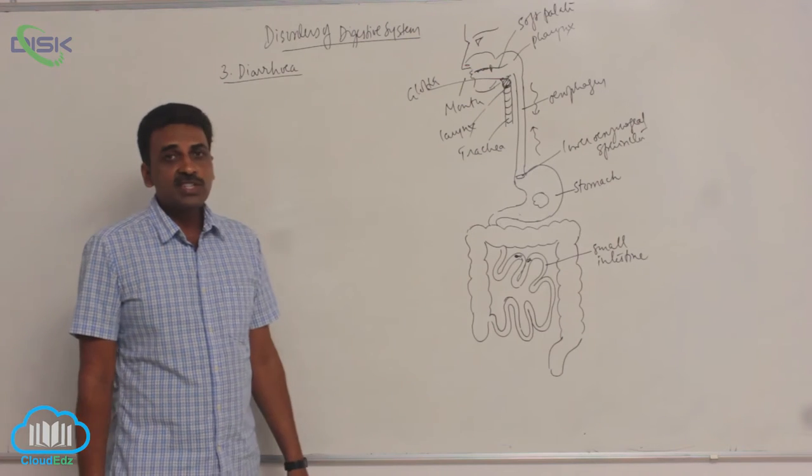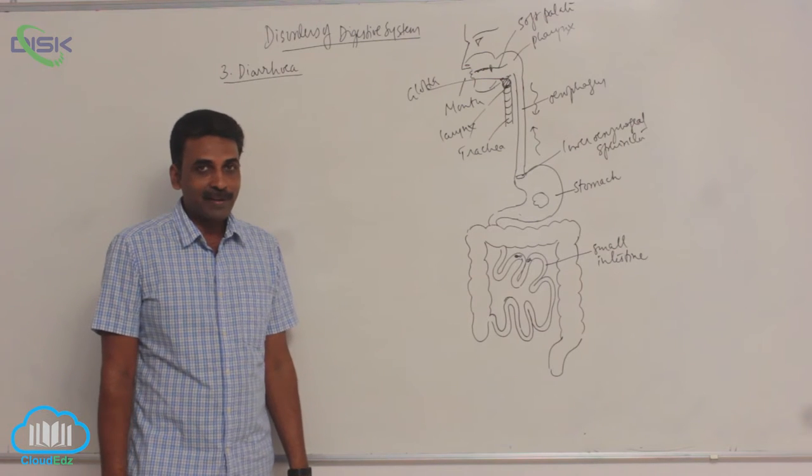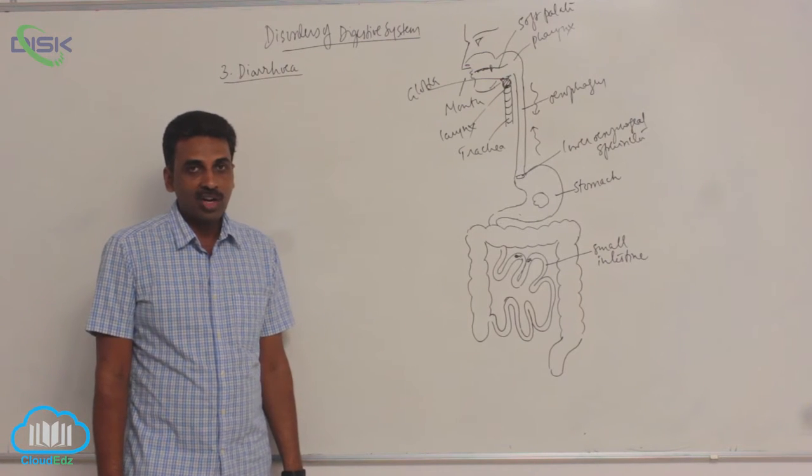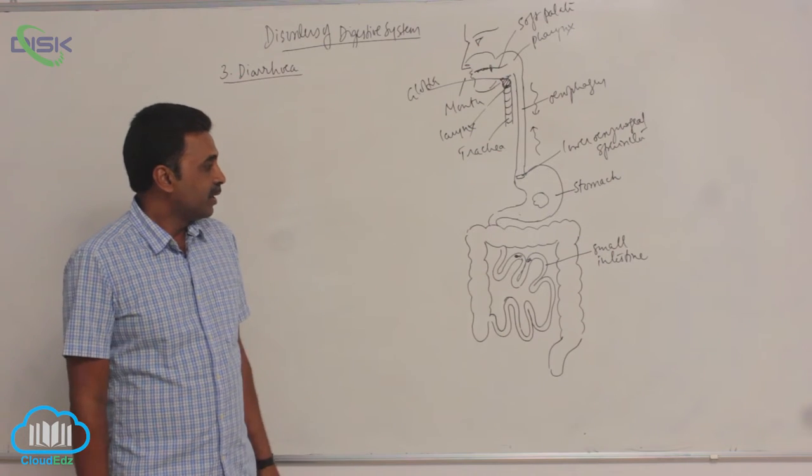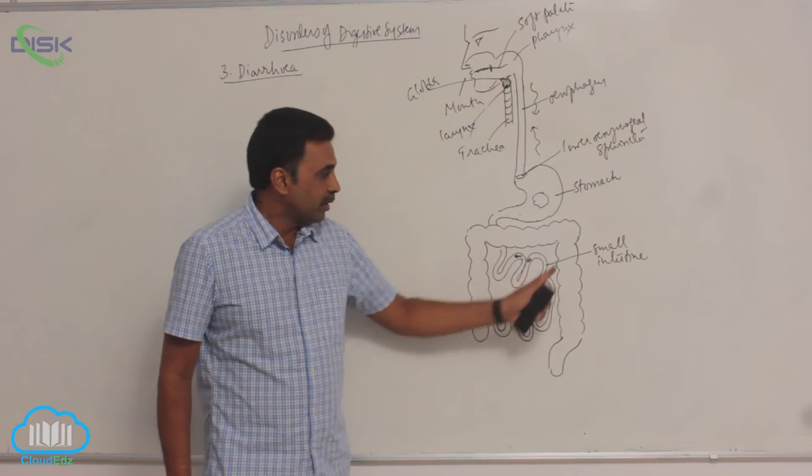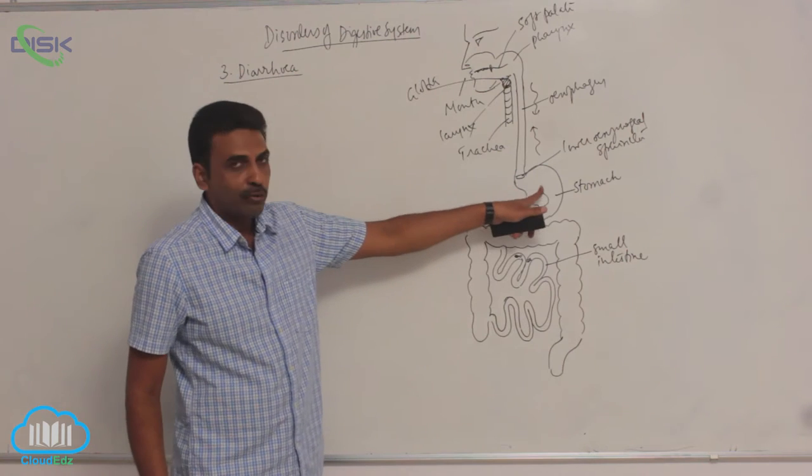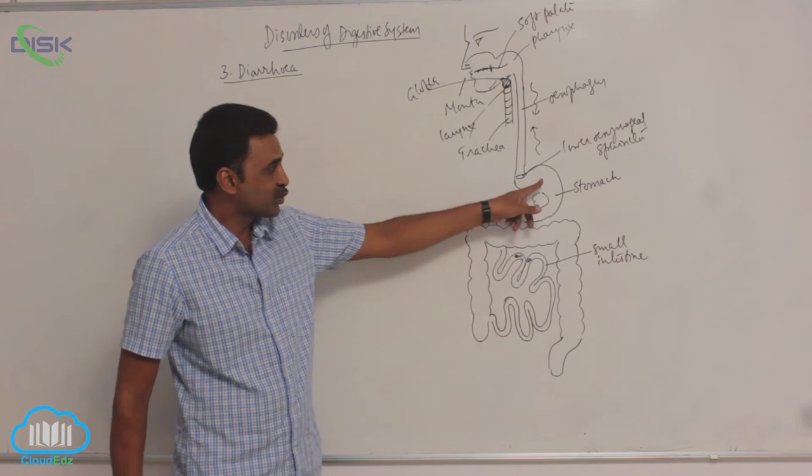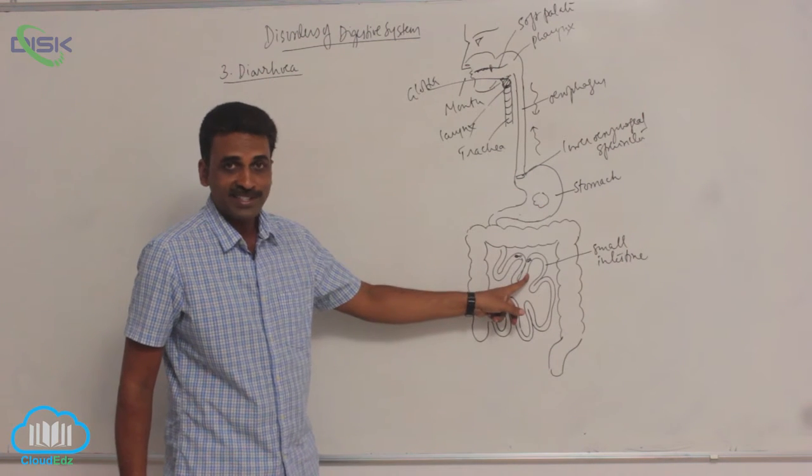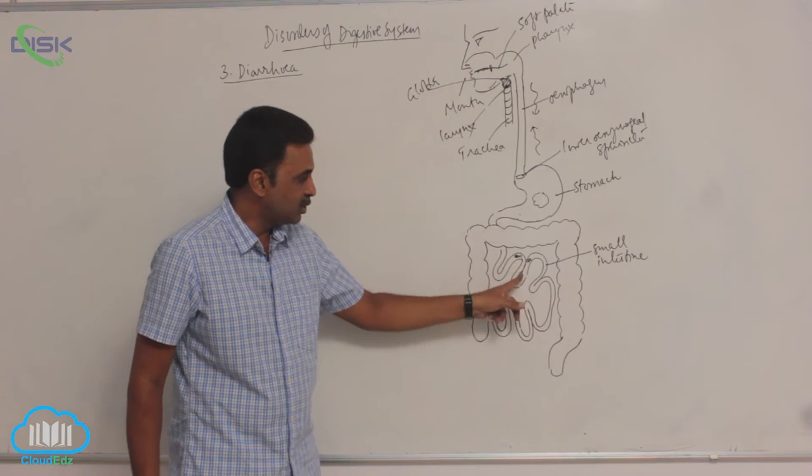The third digestive disorder is diarrhea. Now, the contents of the gut we know after food is partially digested inside the stomach, food enters into the small intestine: duodenum, jejunum, ileum.